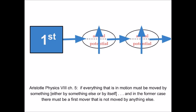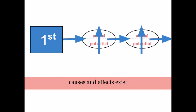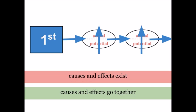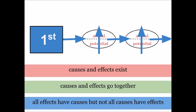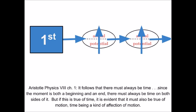So that means Aristotle's universe had a beginning, right? Not so fast. Remember where we started. Causes and effects exist. They go together. And you cannot get an infinite effect from a finite cause. We're having fun with that third common sense idea there. And according to Aristotle, time and motion are friends. Really good friends. So, it follows that there must always be time. Since the moment is both a beginning and an end, there must always be time on both sides of it. But if this is true of time, it is evident that it must also be true of motion, time being a kind of affection of motion.